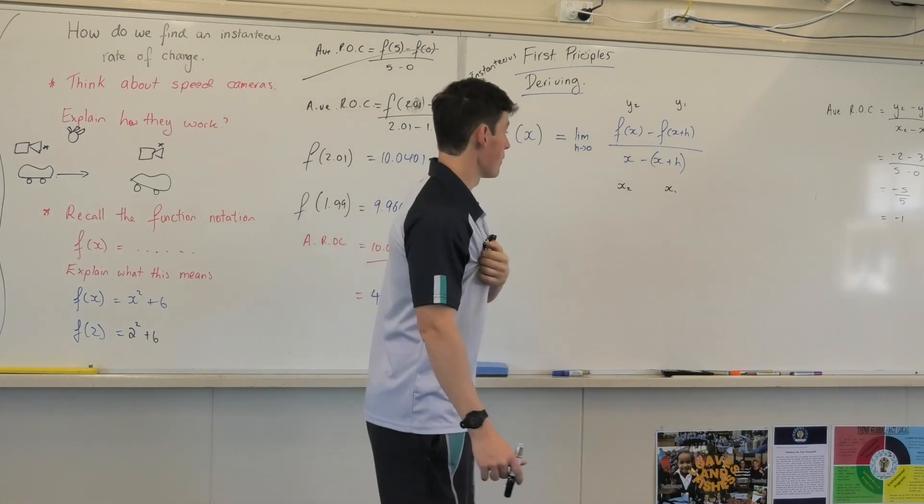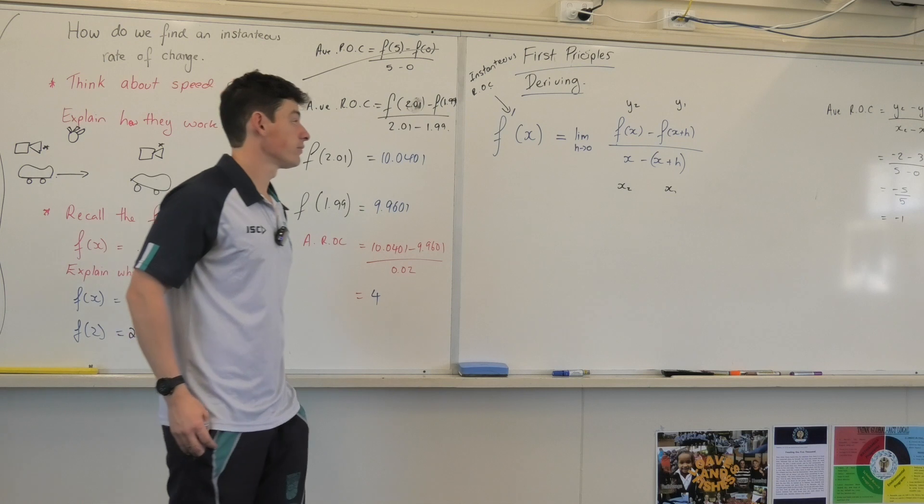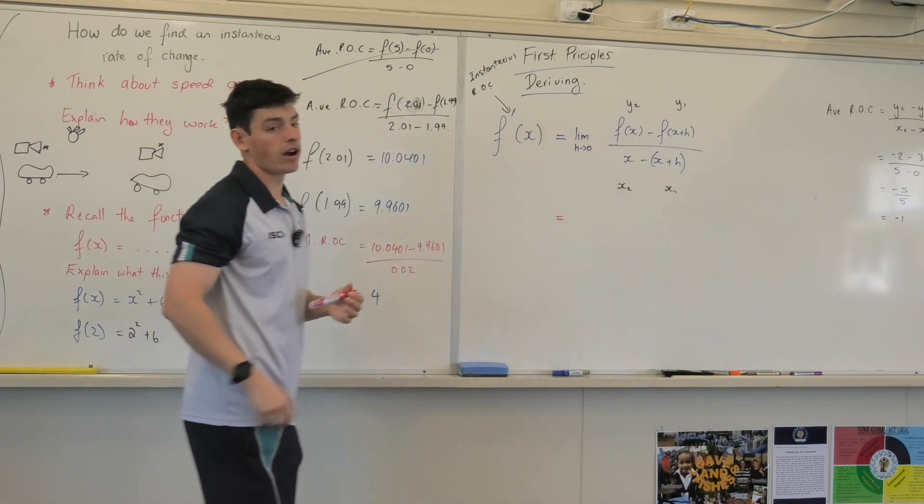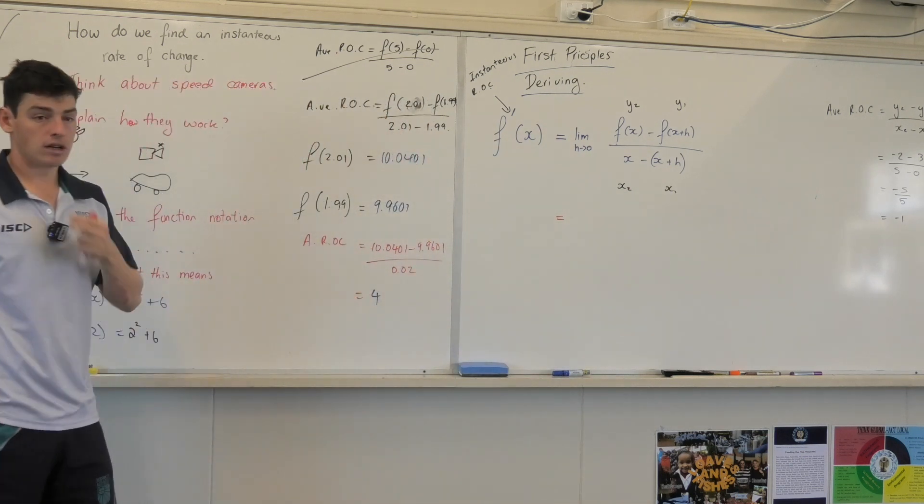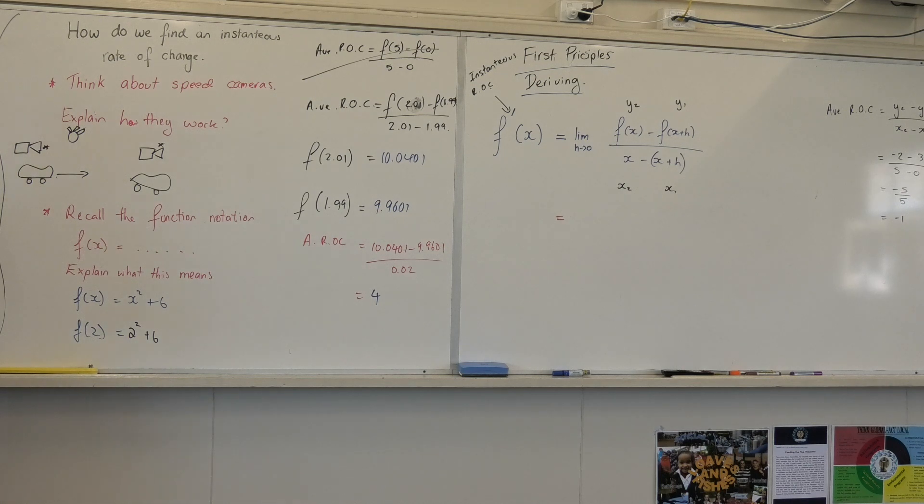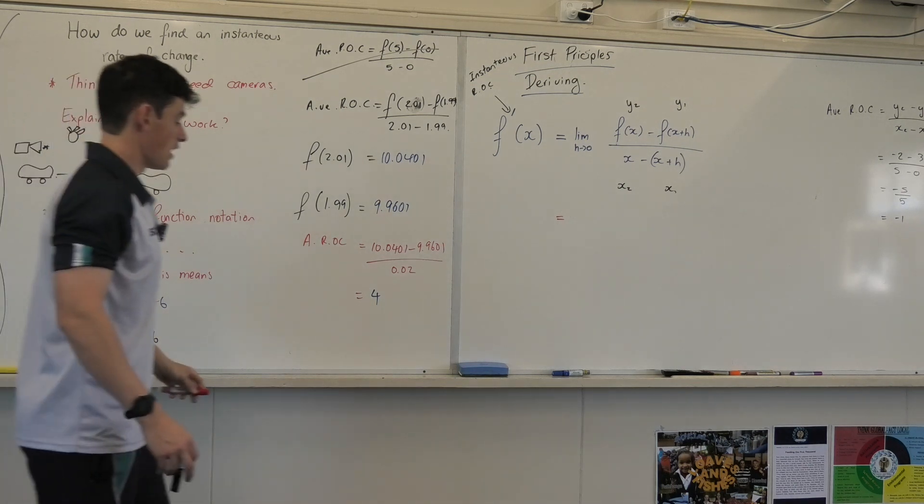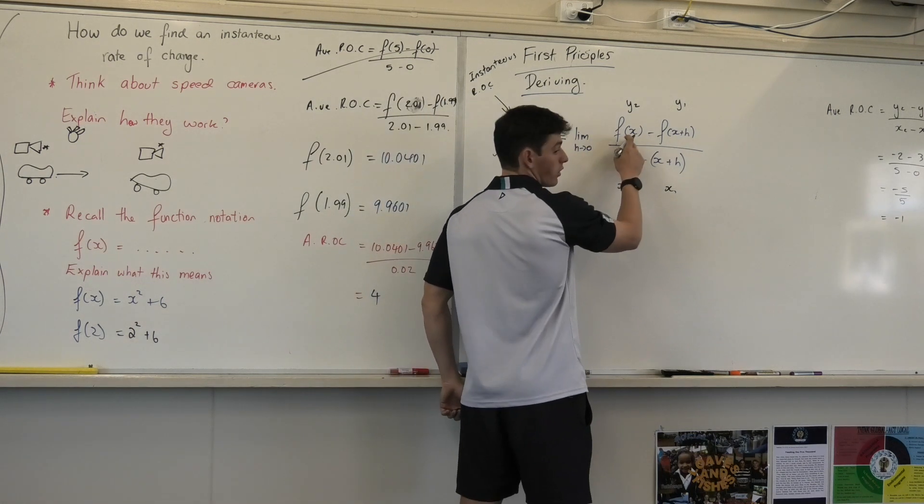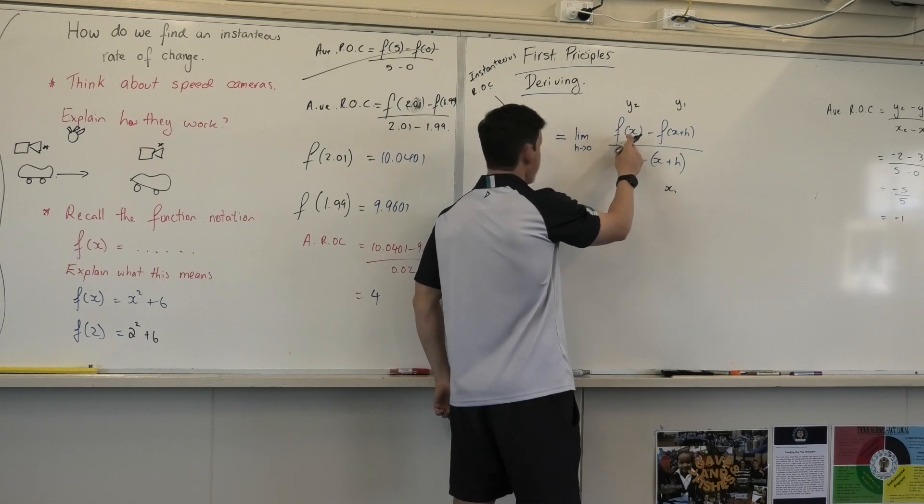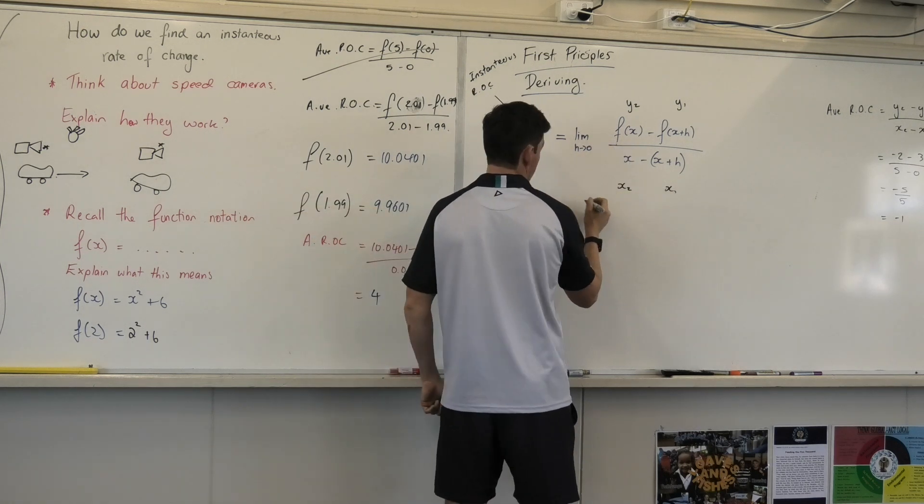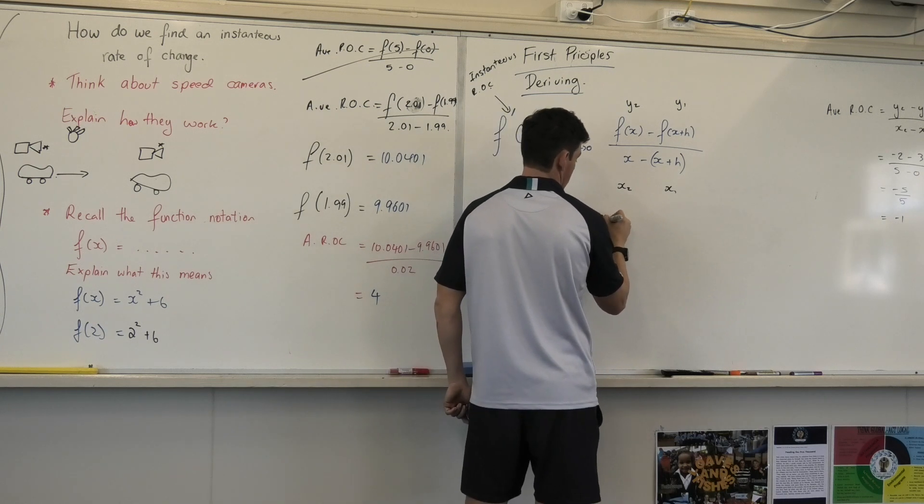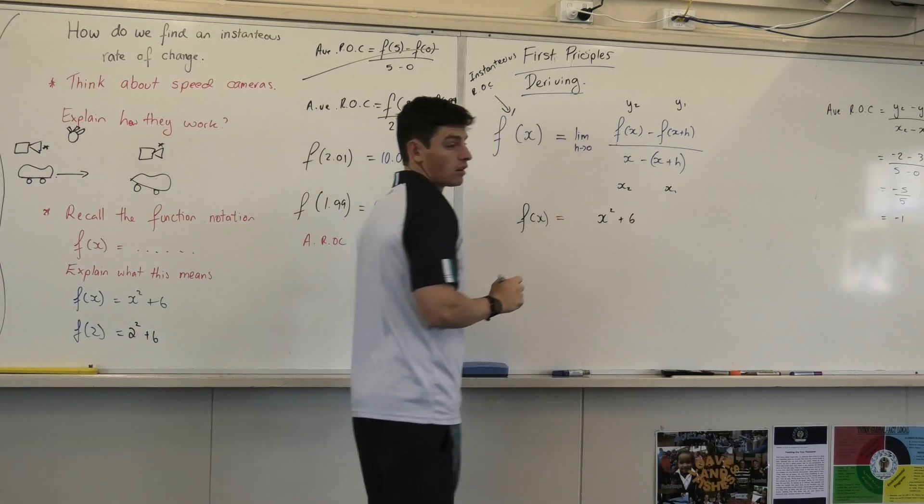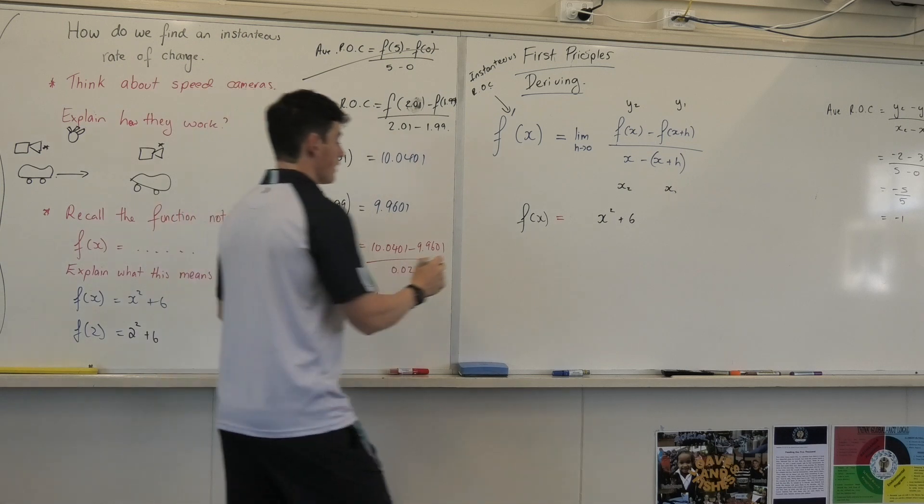Now I'm going to show you how we use this. So I'm going to try using our equation from 4. So now I have fx with what? What was fx before? x squared plus 6. So that's my fx. Are we happy with that?